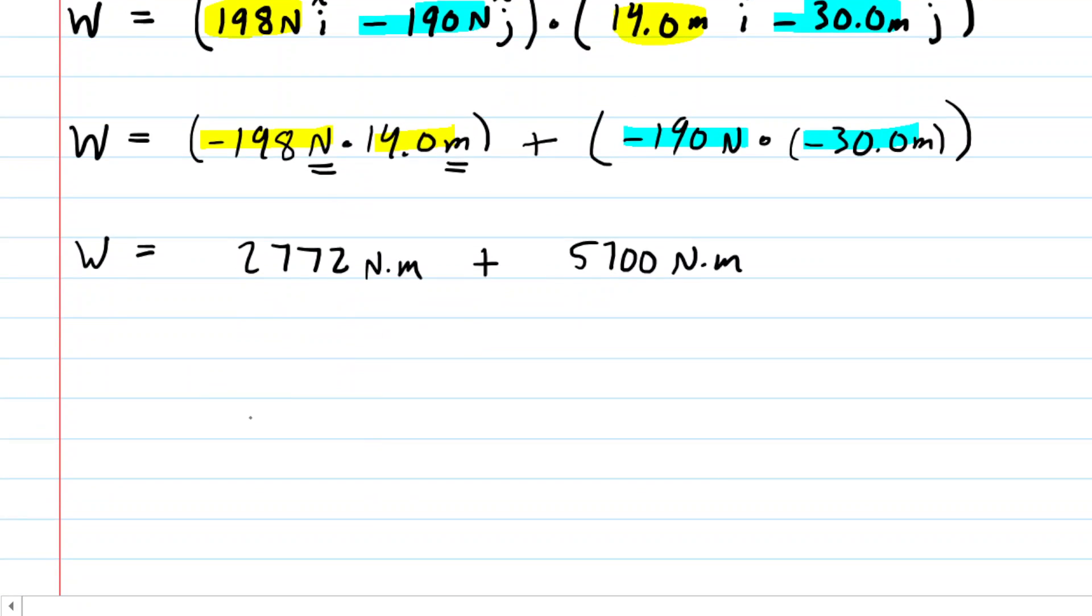And then again, you just add those two products together. When you do so, you should get 8472 newton meters. And of course a newton meter is equivalent to a joule. So the final answer to the question is 8472 joules.